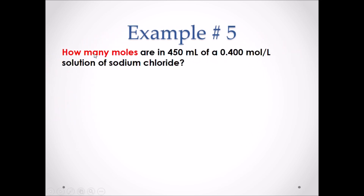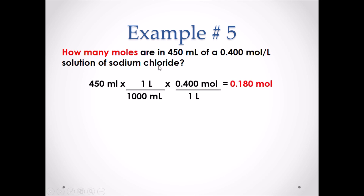Example 5: How many moles are in 450 milliliters of a 0.400 mol/L solution of sodium chloride? Moles per liter can be used as a unit conversion factor. Start with 450 mL, convert to liters by dividing by 1000 mL, then multiply by 0.400 mol/L. The liters cancel, leaving moles. The answer is 0.180 moles of sodium chloride.